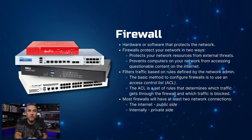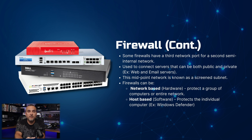Firewalls are crucial components of network security, available as hardware or software. They safeguard network resources from external threats and prevent computers within the network from accessing harmful content on the internet, by filtering traffic based on predefined rules set by the network administrator. Most firewalls have at least two network connections — one facing the internet (public side) and one facing internally (private side). Some feature a third port for a screen subnet connecting servers that serve both public and private functions, such as web and email servers. Firewalls come in two types: network-based (hardware) protecting groups of computers, and host-based (software) protecting individual computers, like Windows Defender.